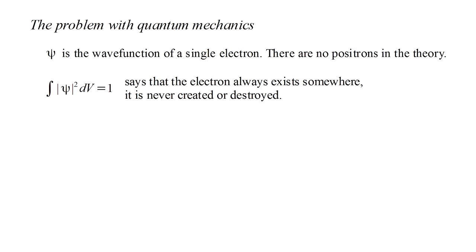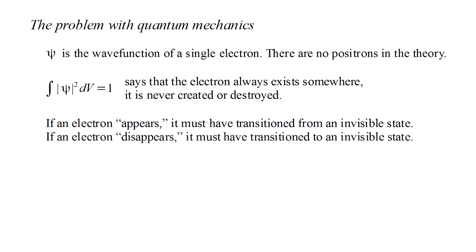It follows that if an electron appears, it must have already existed, and merely transitioned from an invisible state to a visible state. And if it disappears, it must have merely transitioned to an invisible state, in which it still exists. The Dirac Sea provides the required invisible state. And it provides a way to account for the properties of a positron as a hole in the Dirac Sea, in a theory that only describes electrons.